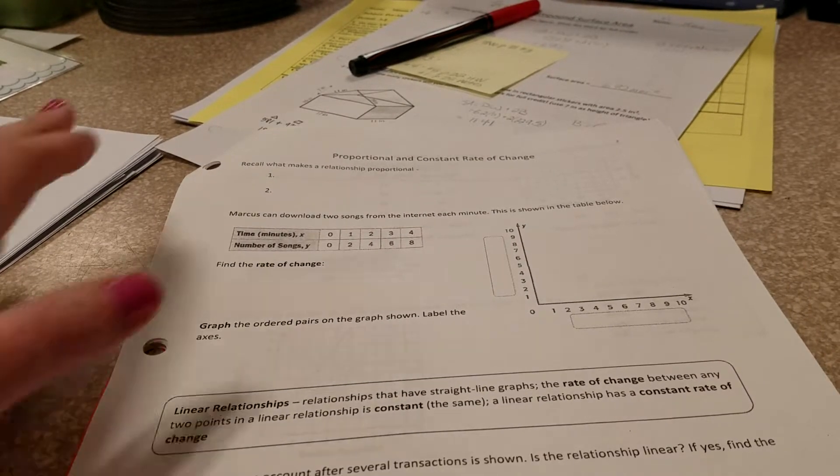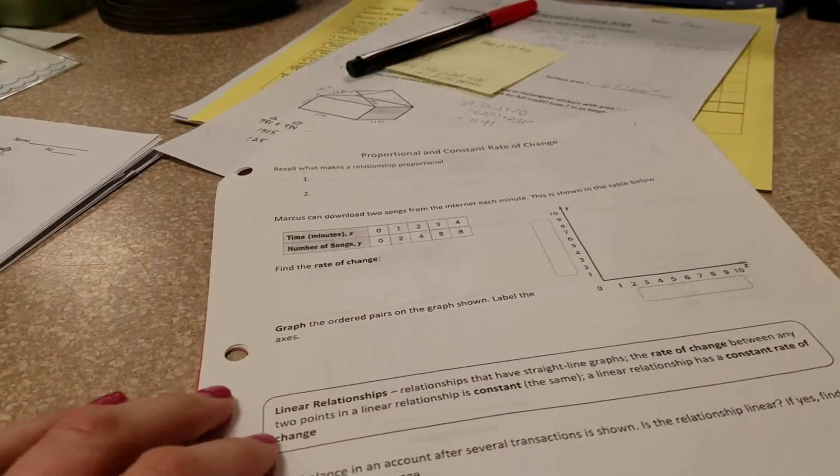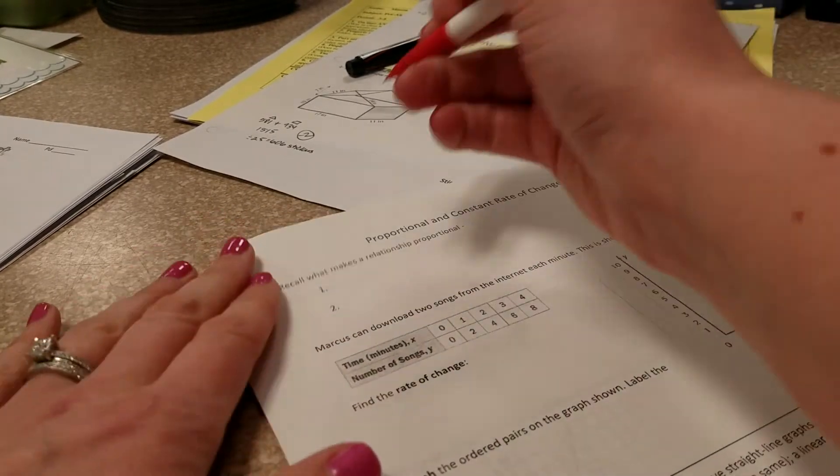First lesson for this new chapter is about proportional and constant rate of change. So just to remind you what makes a relationship proportional.